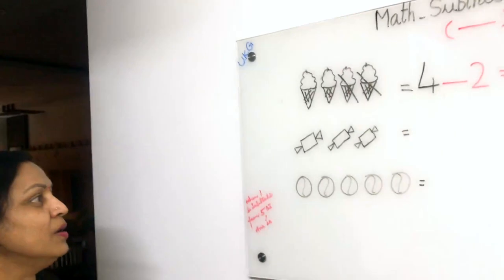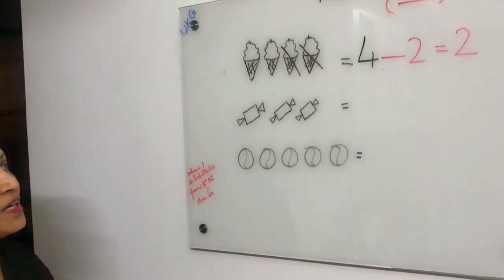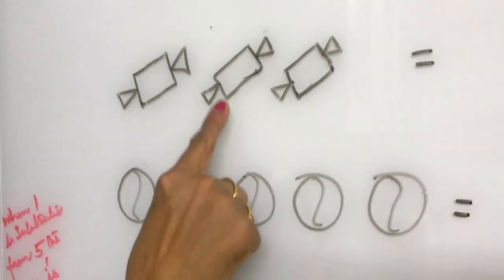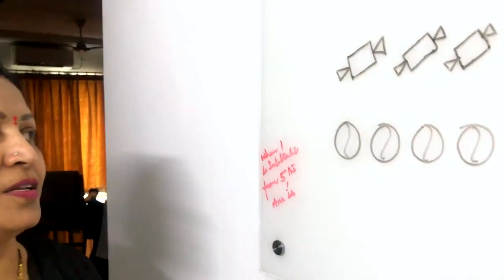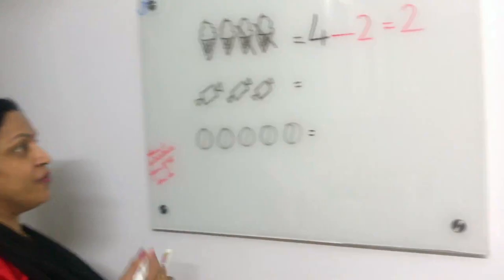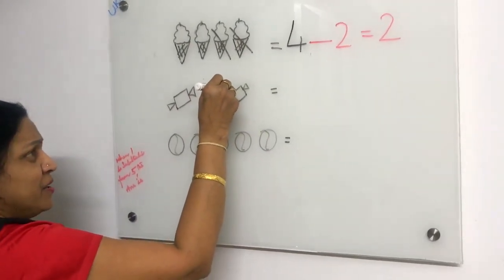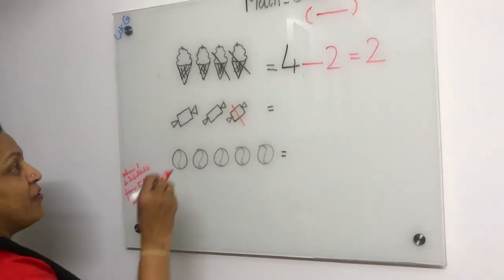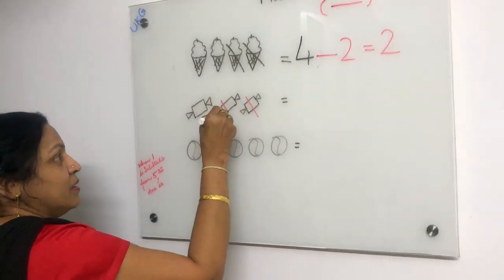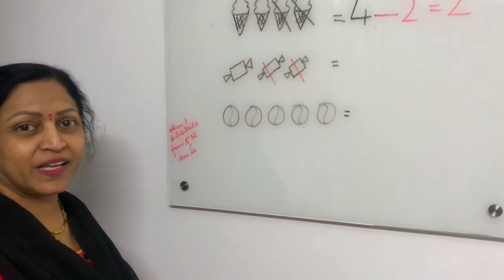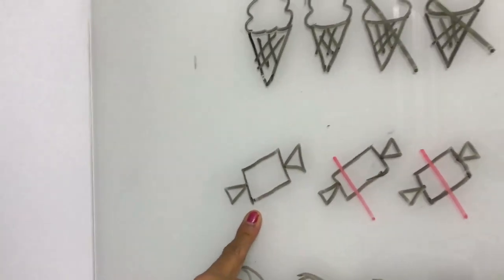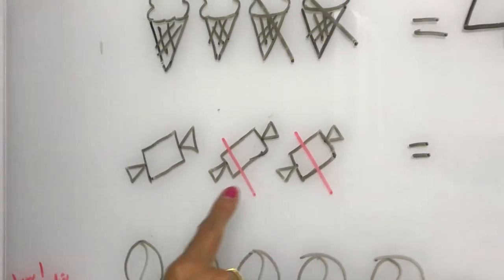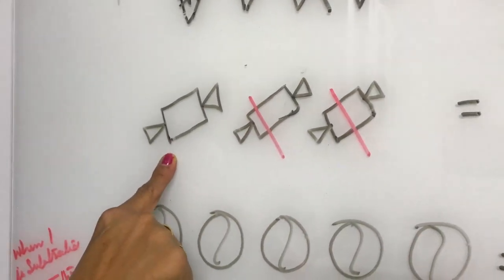Now let's count chocolates. How many chocolates are here? One, two, three — three chocolates are there. In these chocolates, I have given one chocolate to Tejaswini and one to Anandiyam. Now how many remaining chocolates are there? One is there. When two is subtracted from three chocolates, the answer is one.